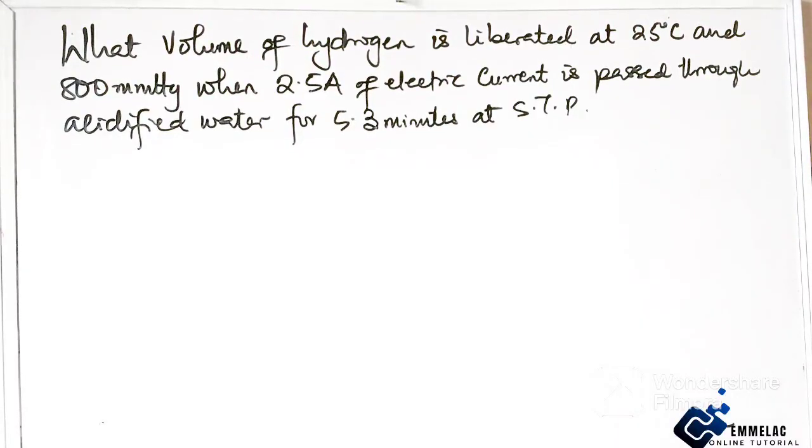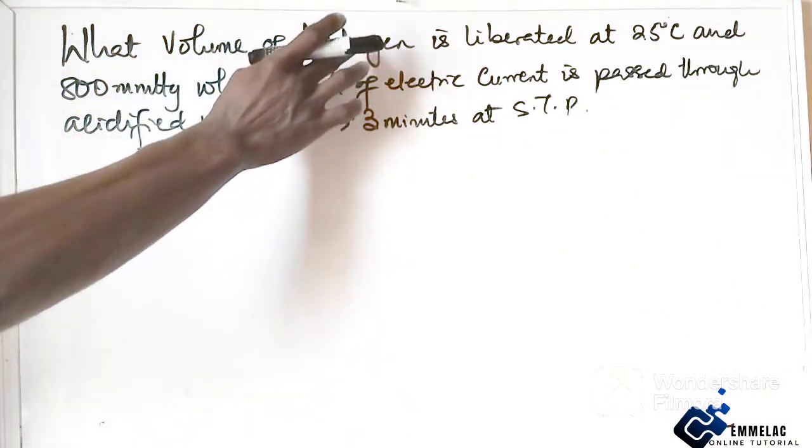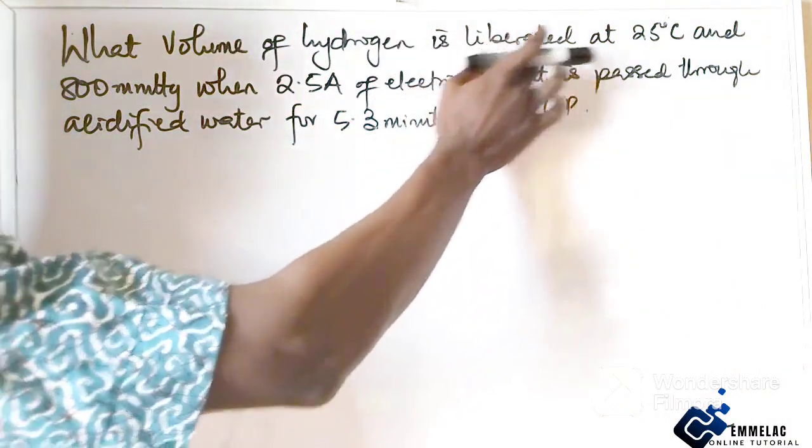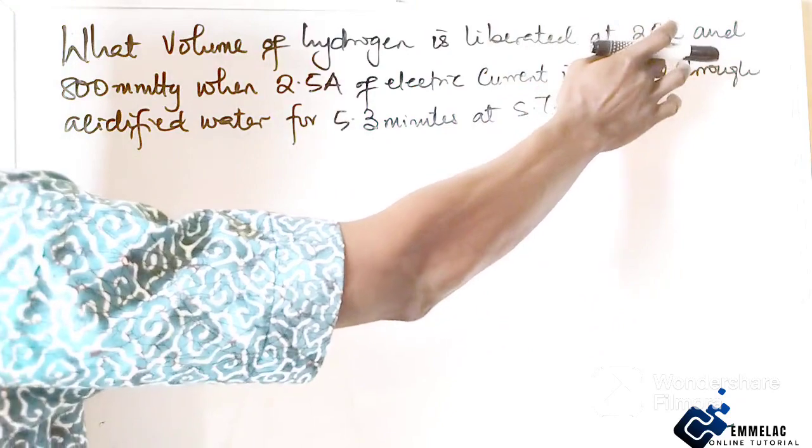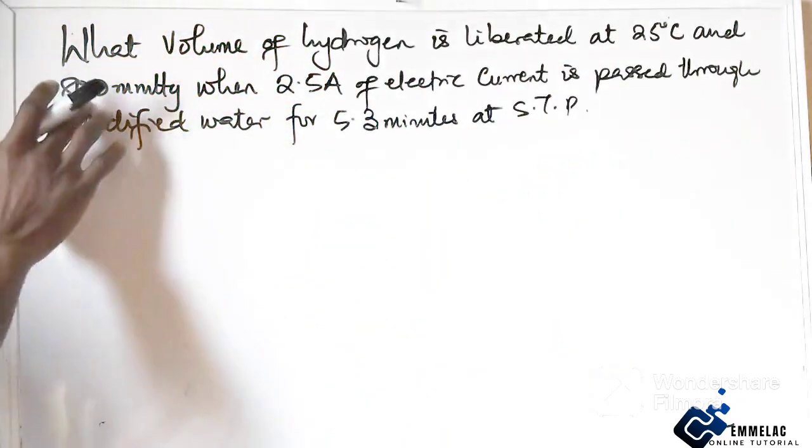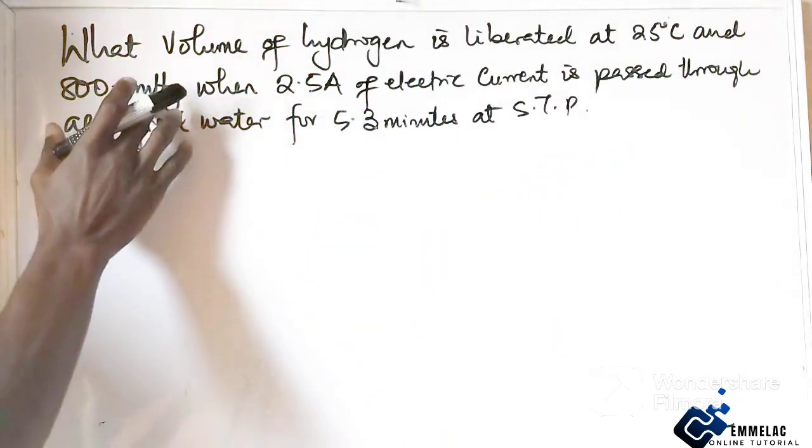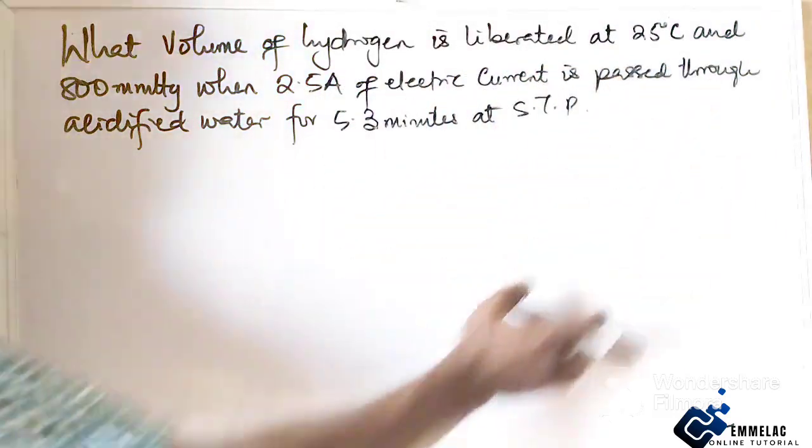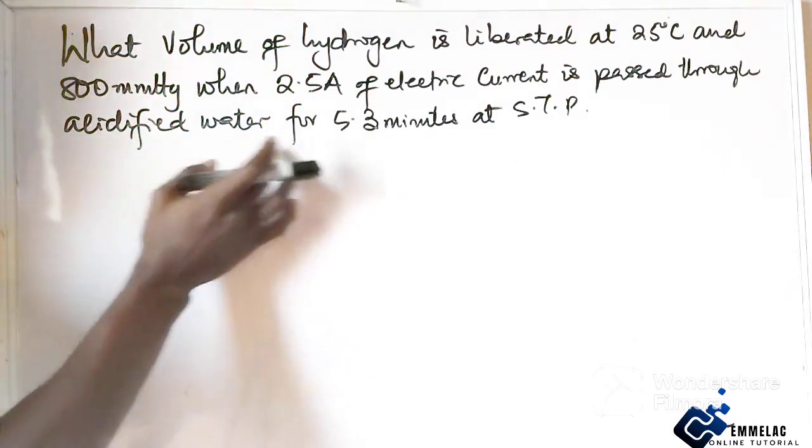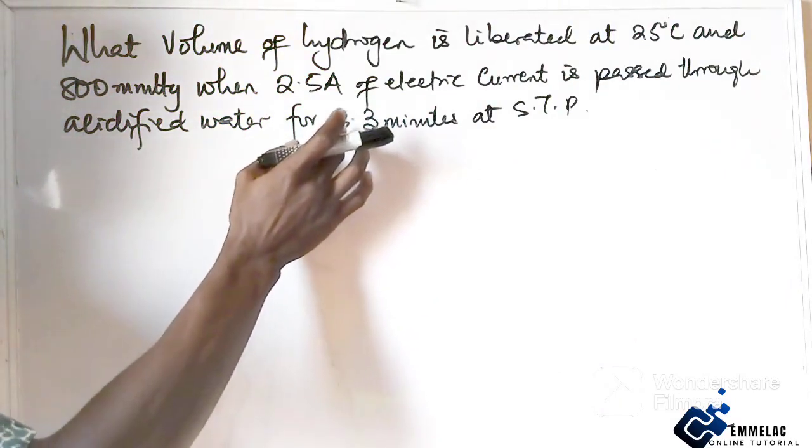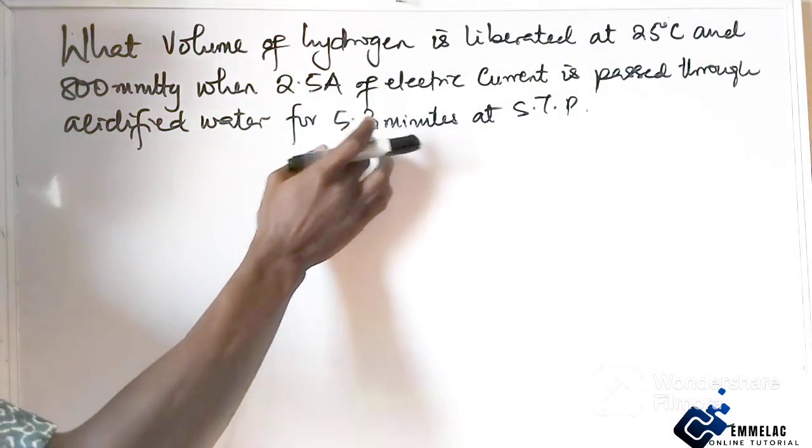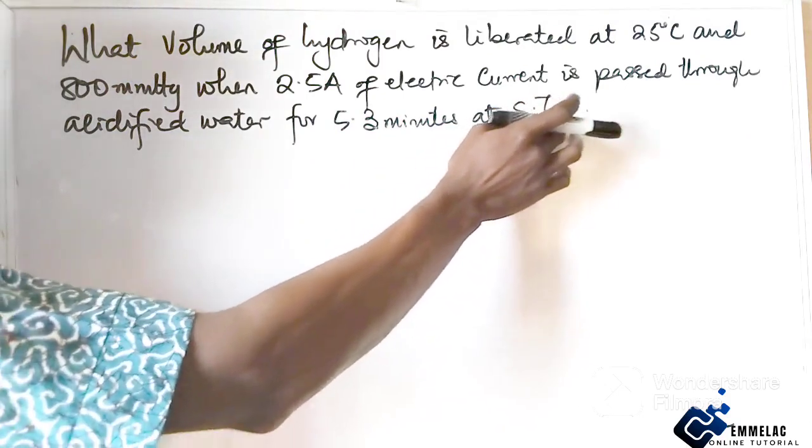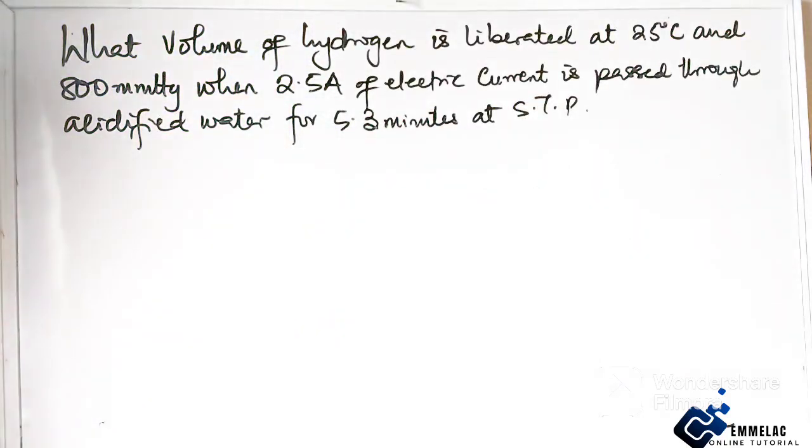Welcome to Amilak Online Tutorial. Before us is this question that says: What volume of hydrogen is liberated at 25 degrees Celsius and 800 millimeter mercury when 2.5 ampere of electric current is passed through acidified water for 5.3 minutes at STP, standard temperature and pressure?